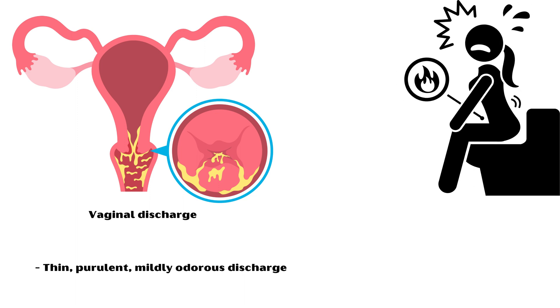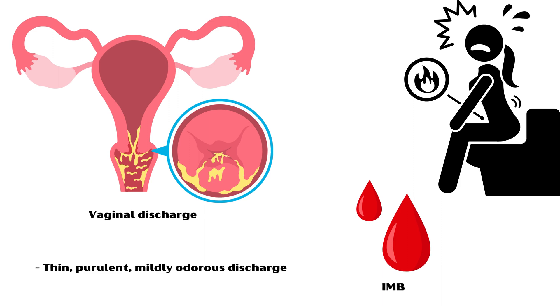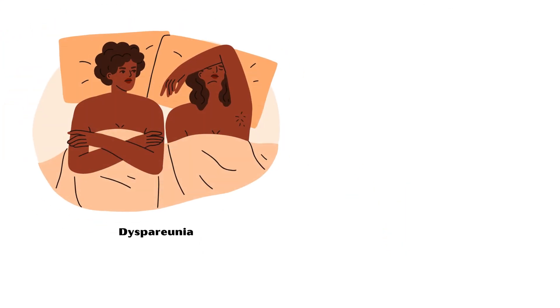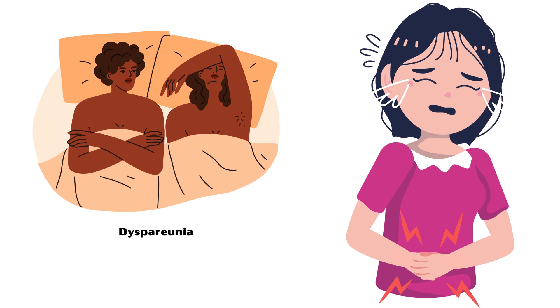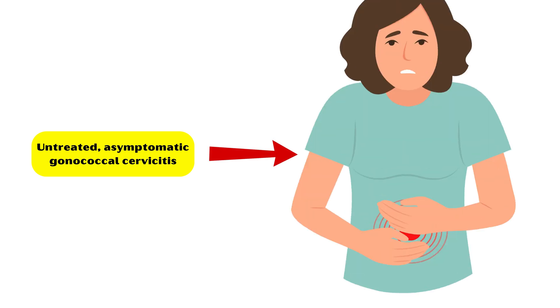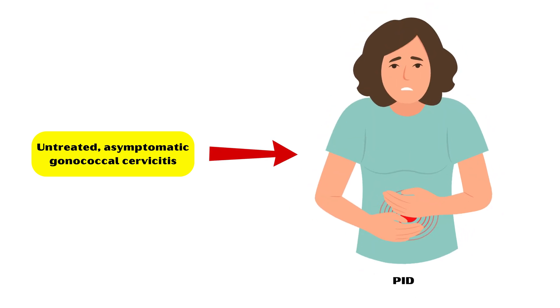Other symptoms in women include dysuria or pain during urination, intermenstrual bleeding, dyspareunia or pain during intercourse, and mild lower abdominal pain. Untreated asymptomatic gonococcal cervicitis can progress to pelvic inflammatory disease.